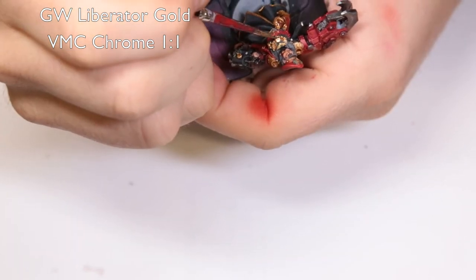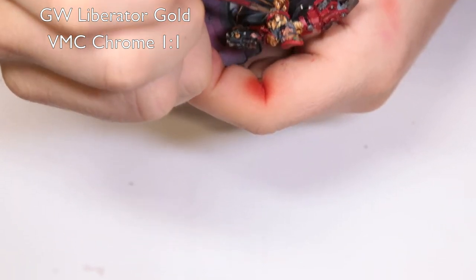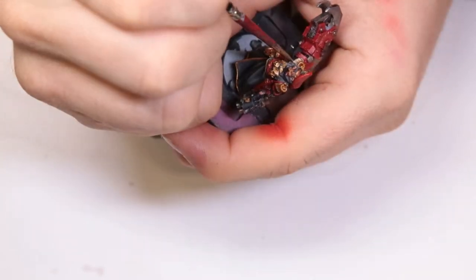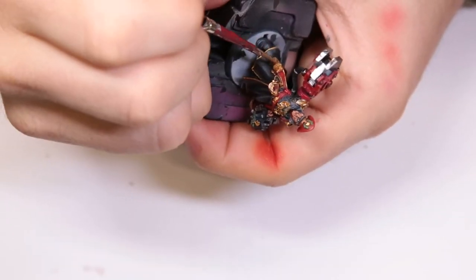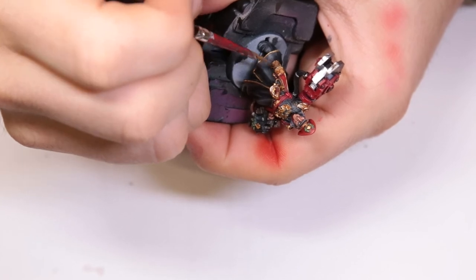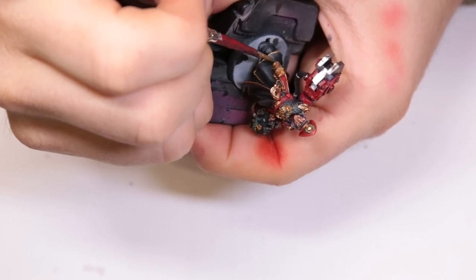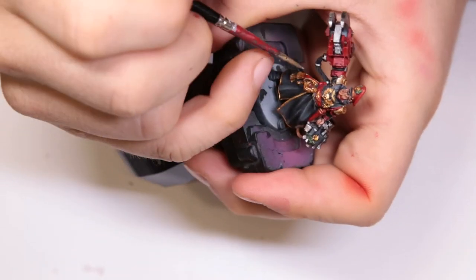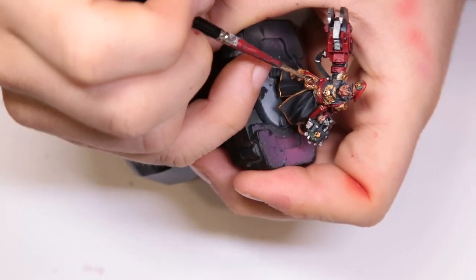This is the first time I've tried this combo, but we're coming in with Liberator Gold and Vallejo Metal Color Chrome mixed 1 to 1. And just coming through and picking up the highest points of the gold. We're also getting the high points on the folds of his cloak. It looks a little stark to begin with, but we wash it down again after this and it looks great. So just give that a try next time.